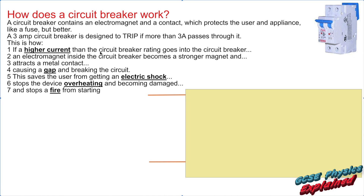If a higher current than the circuit breaker rating goes into the circuit breaker, an electromagnet inside becomes a stronger magnet and attracts the metal contact, causing a gap and breaking the circuit. And just like the fuse, this saves the user from getting an electric shock, stops the device from overheating and becoming damaged, and stops a fire from starting.